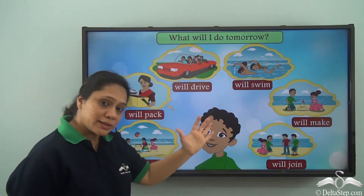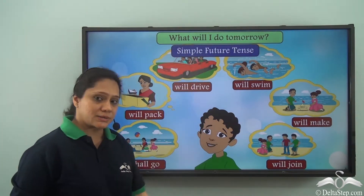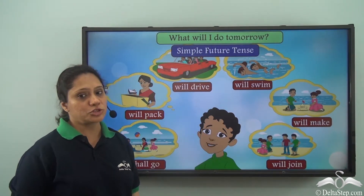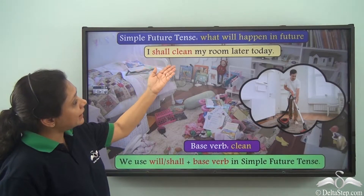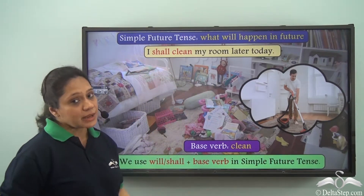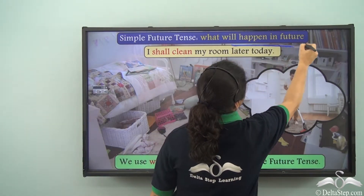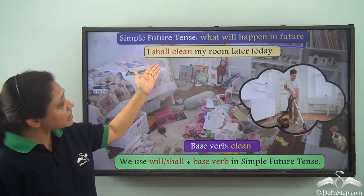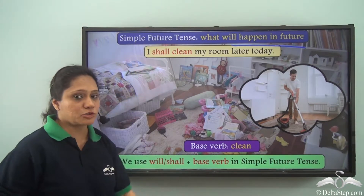So all these verbs are in the simple future tense. Let us learn some more examples of the simple future tense. I shall clean my room later today. This sentence is telling us about an action that will happen in the future, so it is in the simple future tense.